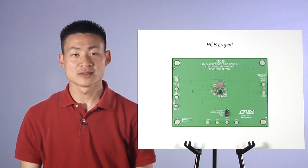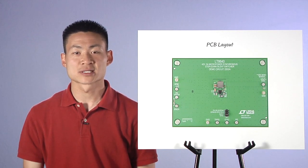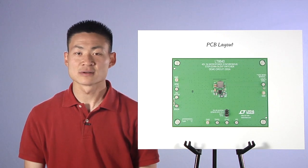These hot loops between the VIN, ground pins and the input capacitors should be made as small as possible. These layout techniques help maximize performance from the LT8640.